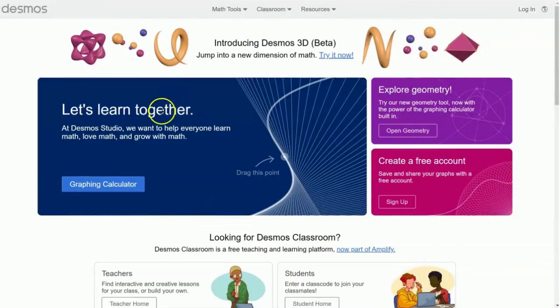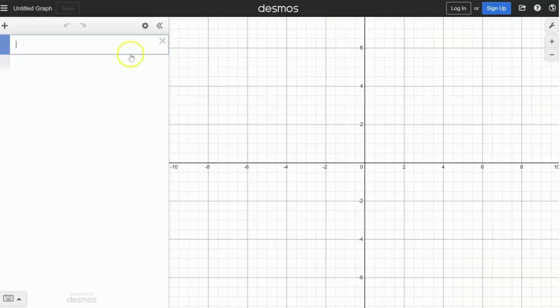Okay, now I'm on the Desmos homepage, so to get to the graphing calculator, I hit graphing calculator. And just to get this started, I'm going to type in an equation in slope-intercept form. And one thing that's super nice about Desmos is that it knows to look for significant points. So here it looks like it found the X-intercept. This one is the Y-intercept.